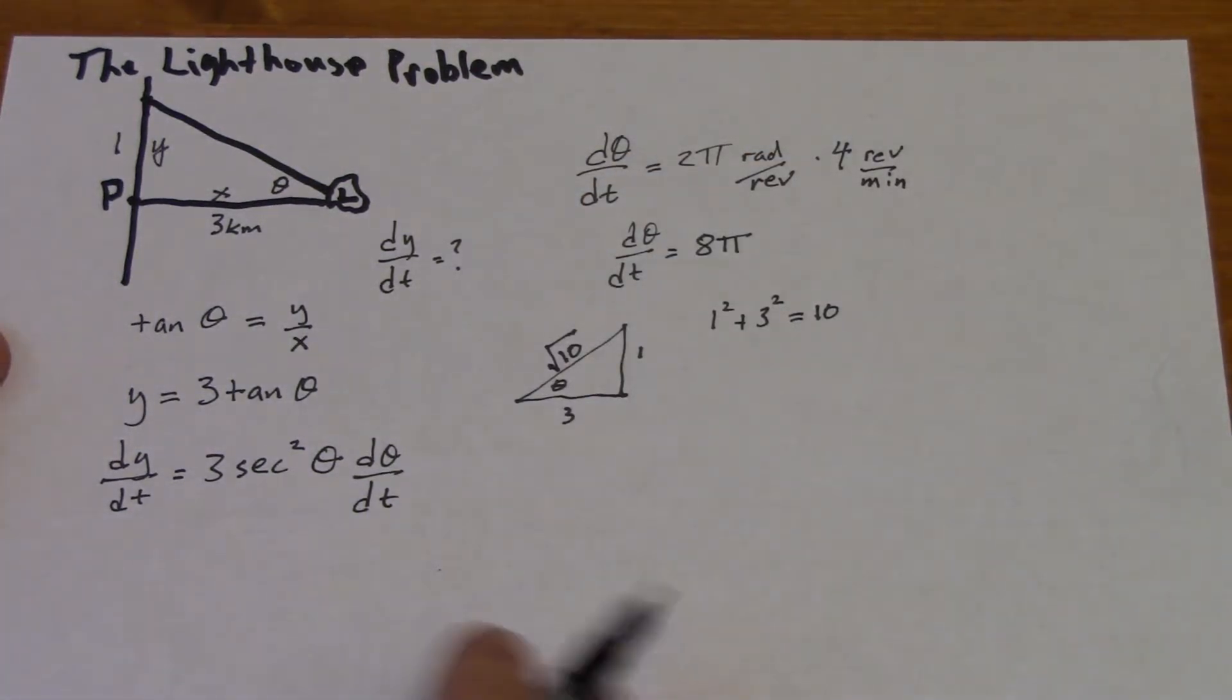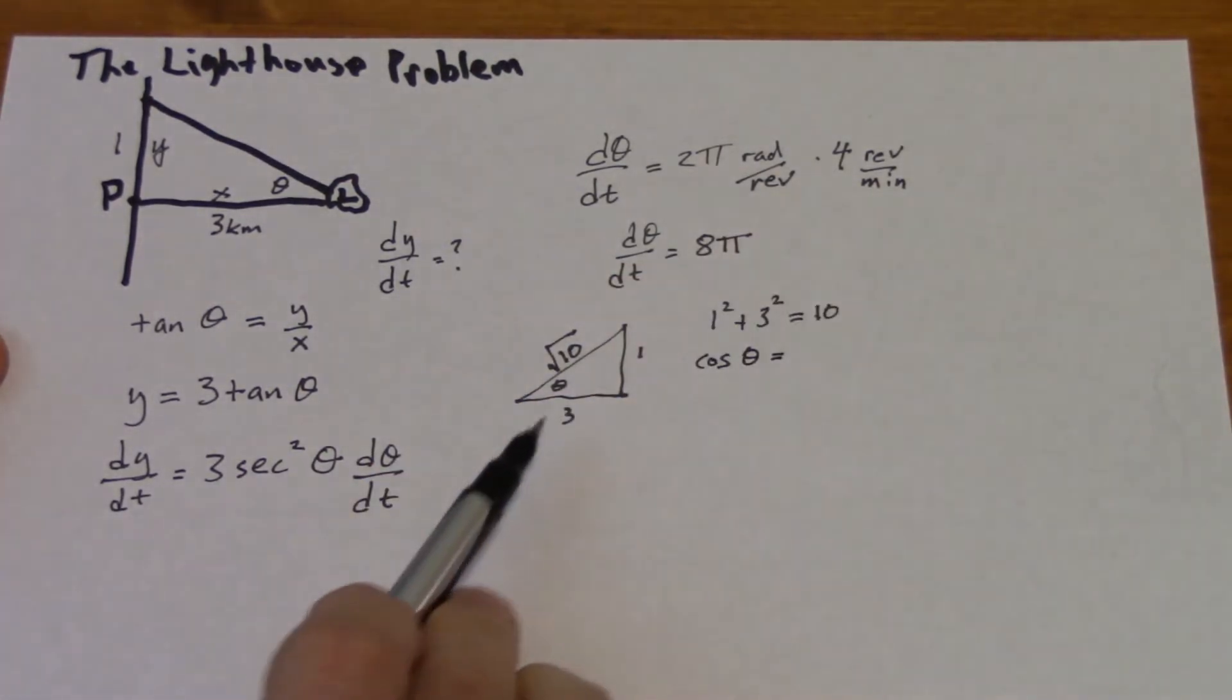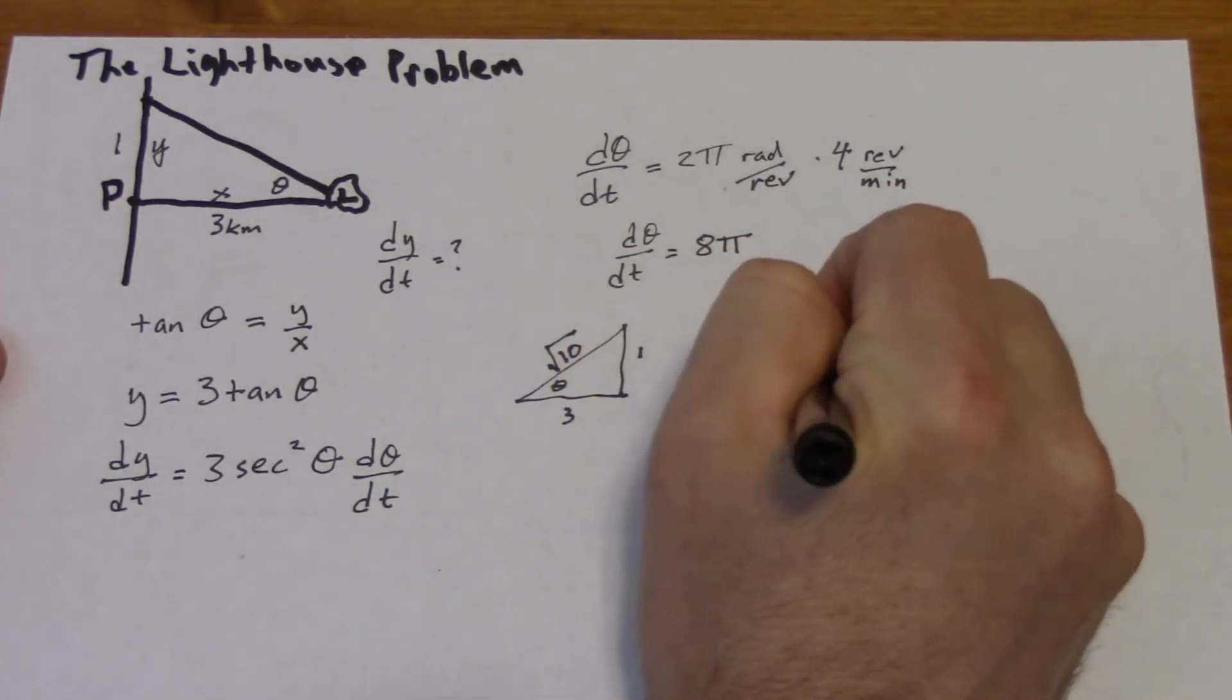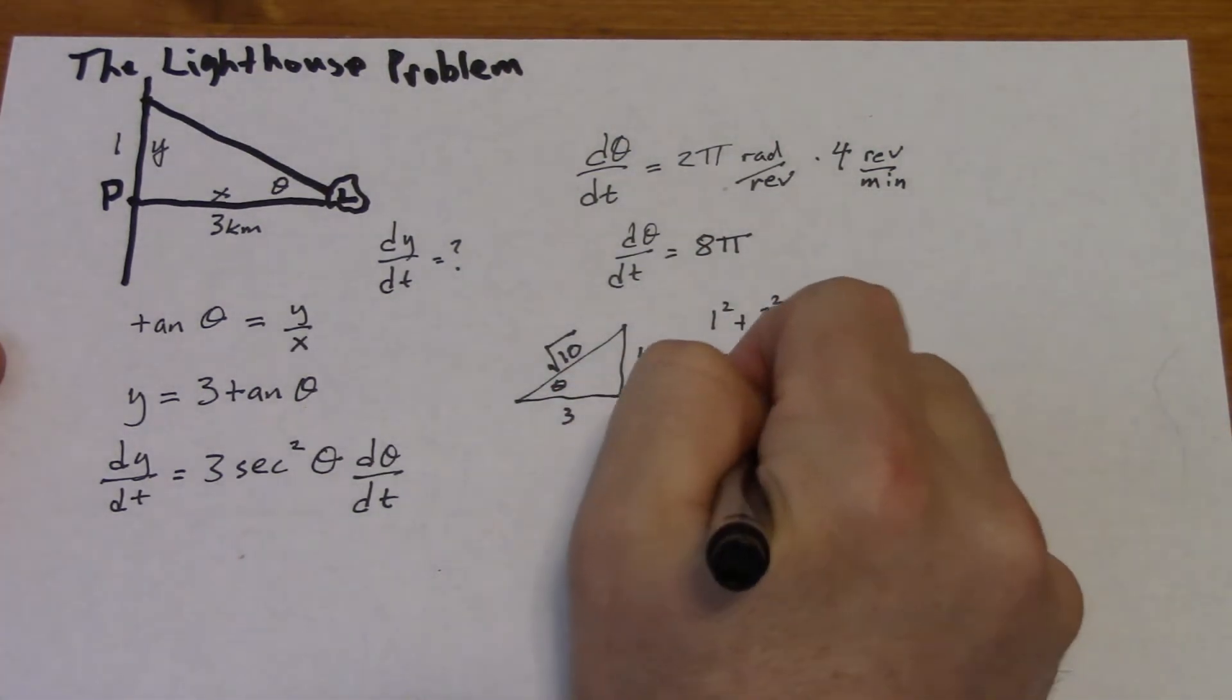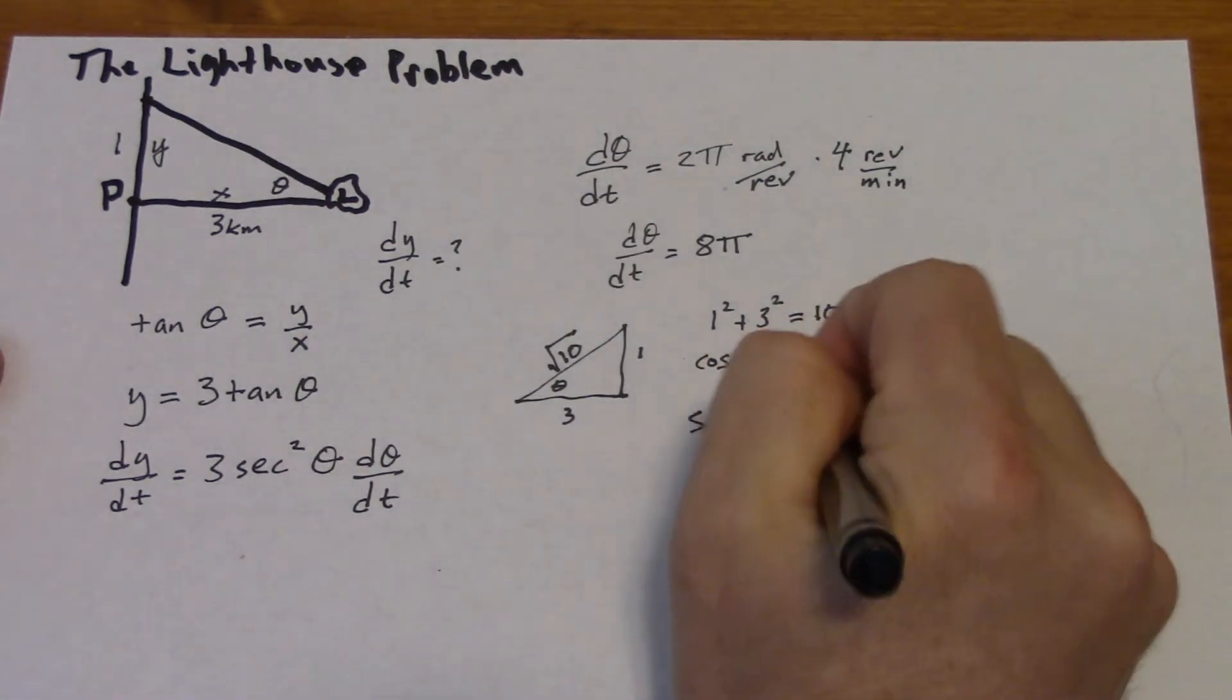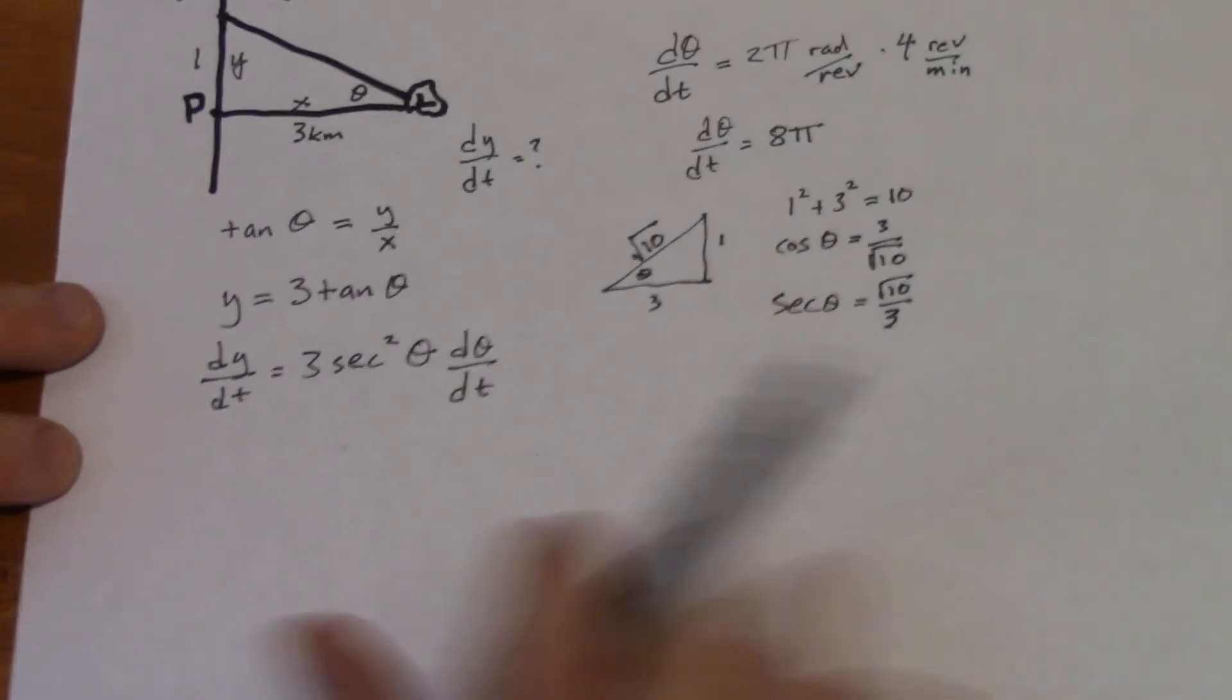Why is that relevant? We need to find secant of theta. We know secant is 1 over cosine, so cosine of theta would be adjacent over hypotenuse, so that would be 3/√10. So that means secant of theta is that flipped, so that's going to be √10/3. We've got dθ/dt, so to come back to this part.